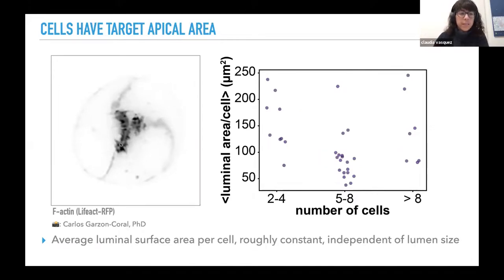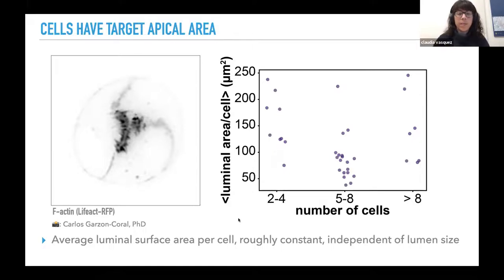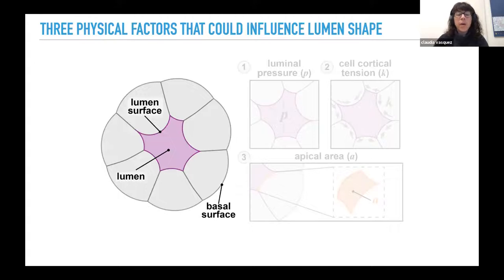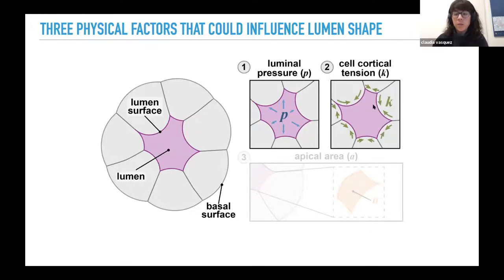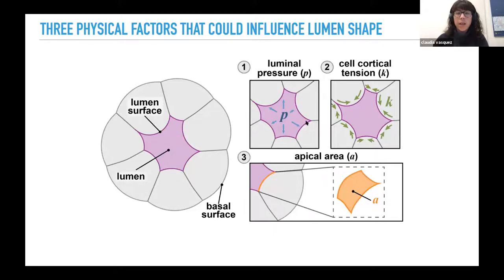We noticed something else when looking at this clover-shaped lumen: there's just so much extra apical surface to constrain the volume enclosed by this lumen. When we plotted the average apical area per number of cells, this was roughly constant, independent of how big the lumen was or how many cells were surrounding it. Cells seemingly have a target apical area independent of how much volume they're enclosing. We thought there were three possible physical factors that could influence lumen shape: first, luminal pressure; second, cell cortical tension; and third, apical area. We went about experimentally modulating each one of these and looking at the change in lumen shape.